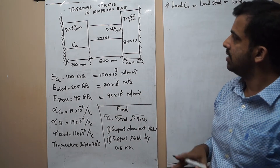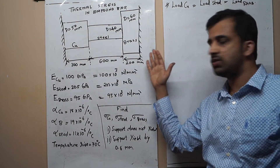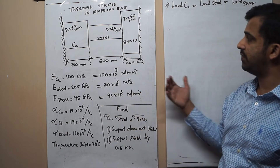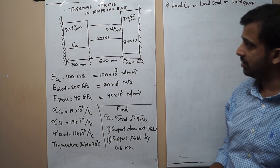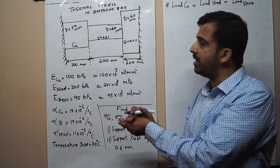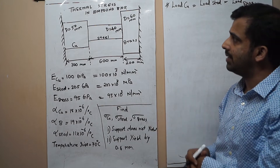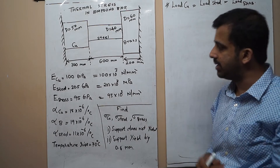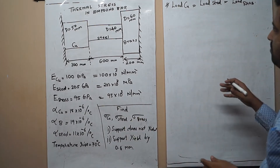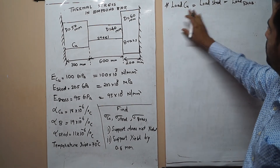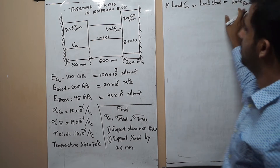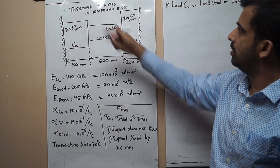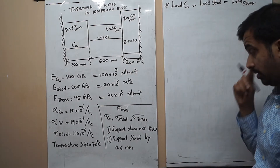This compound bar has both ends fixed, which constitutes the thermal stress problem. Because both ends are fixed, this is an indeterminate structure — the three equations of equilibrium are not sufficient to calculate all the forces on the system. So this is a thermal stress calculation for an indeterminate structure. The key point is that the load on copper equals the load on steel, which equals the load on brass.